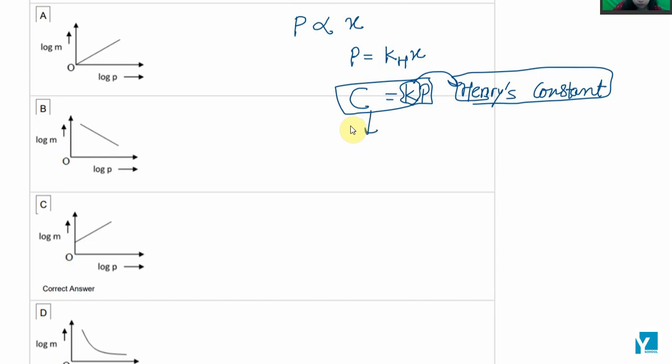If we take log of both sides, then log C equals log k plus log P. According to the given options, C and M are represented here.